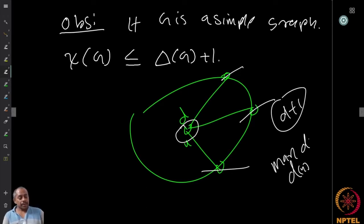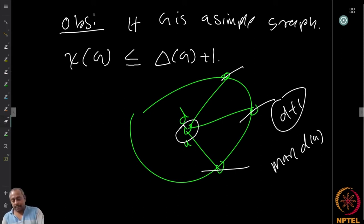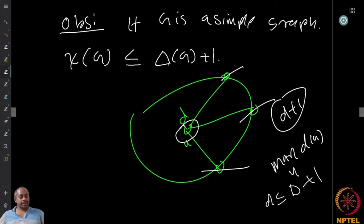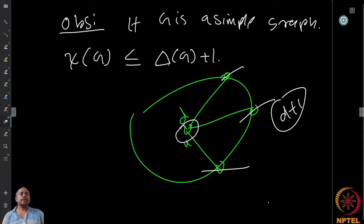Δ is the maximum over all vertices u of degree d(u). Since d(u) ≤ Δ for every vertex, having Δ + 1 colors ensures at least one color is available at every step. So the chromatic number is at most Δ(G) + 1.